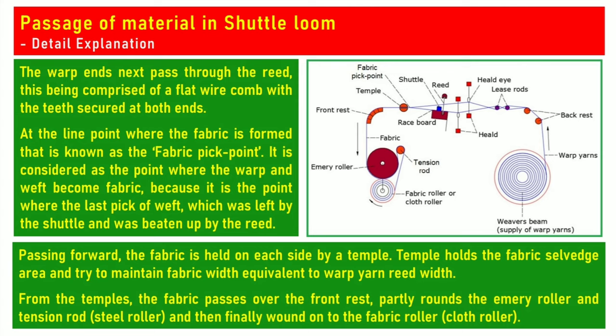Passing forward, the fabric is held on each side by a temple. The temple holds the fabric selvage area and tries to maintain fabric width equivalent to the warp yarn width. From the temples, the fabric passes over the front rest, partly rounds the emery roller and tension rod, and is then finally wound onto the fabric roller.